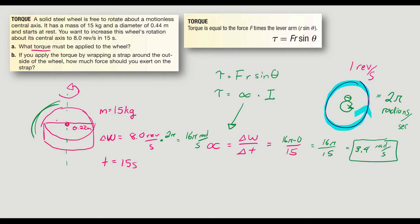We get 3.4 radians per second. That's a pretty important number right there, our angular acceleration. But I still need moment of inertia.